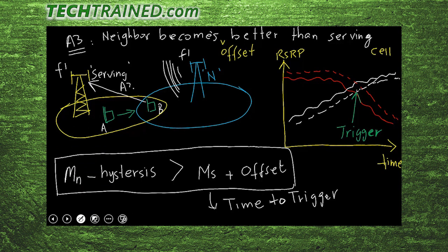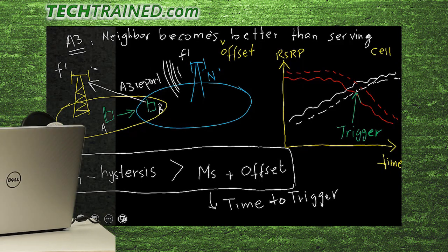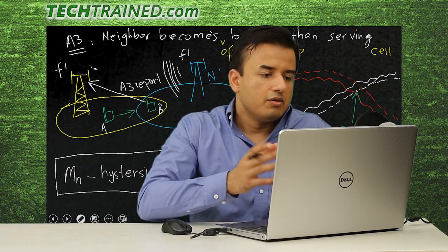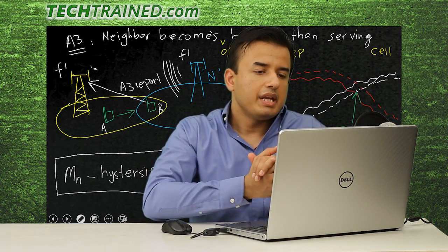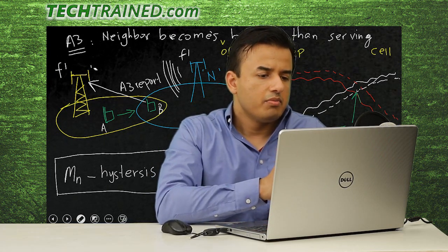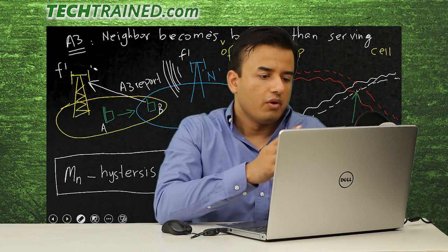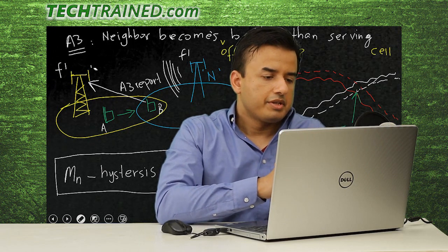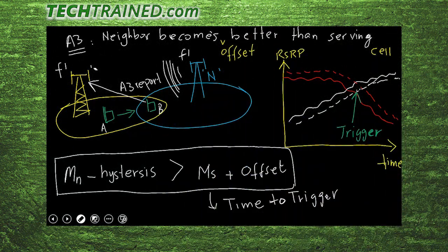The measurement report includes the specific outcome of Event A3. After the A3 report is received, the serving cell — the eNodeB — decides whether a handover needs to take place or not. So handover is not triggered just because the UE sees a stronger signal; Event A3 is the trigger for any intra-frequency handover, and it is the eNodeB's responsibility to manage the preparation and execution phases of the handover.